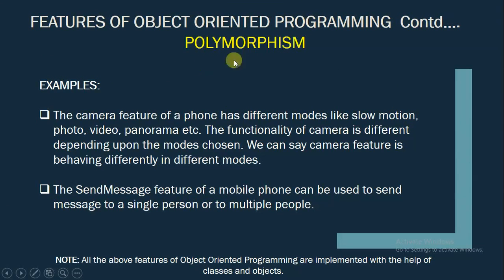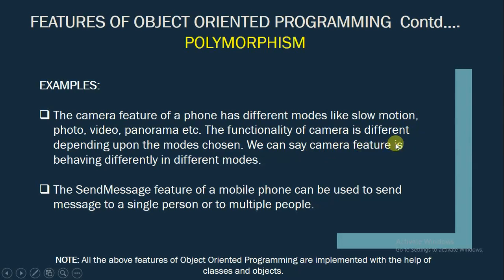Let us understand the feature of polymorphism with the help of a real-life example. The camera feature of a phone has different modes like slow motion, photo, video, panorama, etc. The functionality of a camera is different depending upon the mode you are choosing. If we choose panorama mode, it works differently. If we choose video mode, it works differently. Thus, we can say the camera feature is behaving differently in different modes.